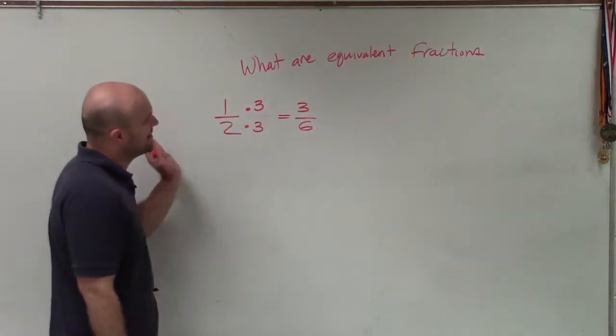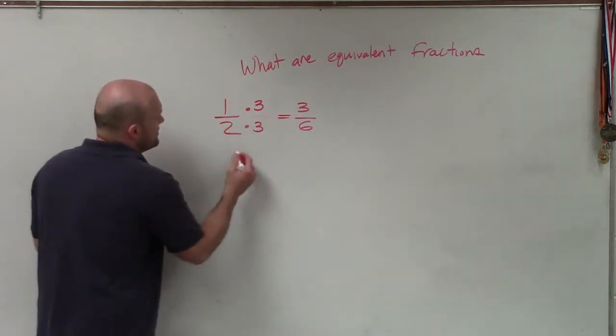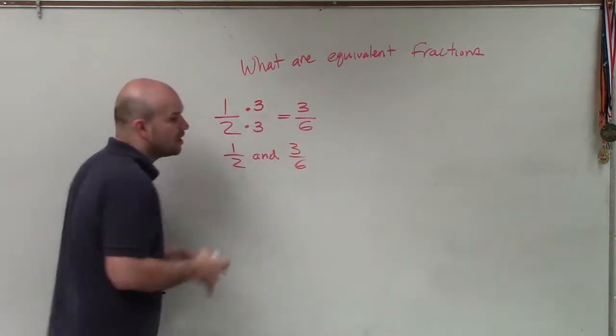So therefore, when I multiply across three over six, which again if we reduce three over six we would get half. So therefore, we could say one half and three over six are equivalent.